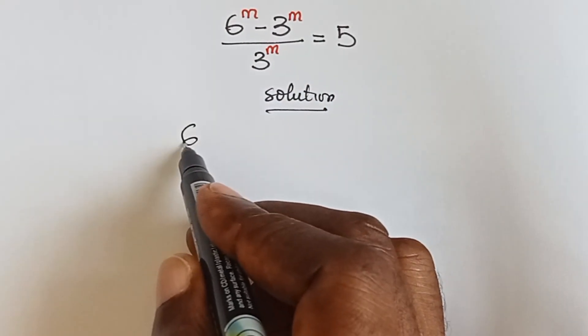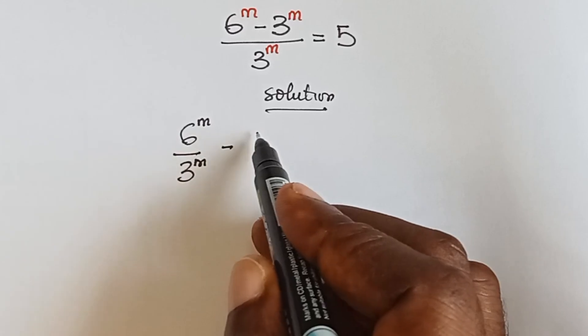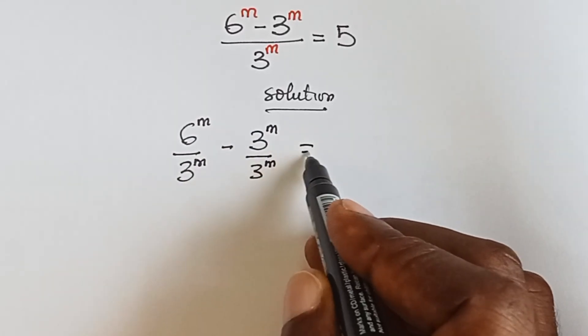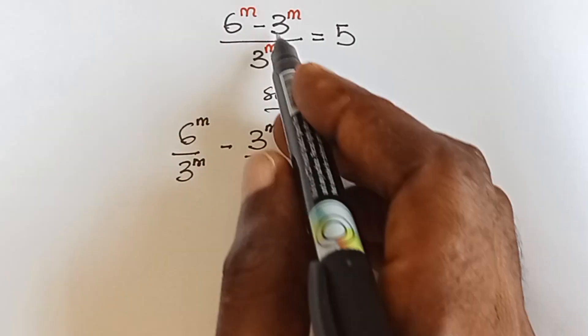This can also be written as 6 raised to power m over 3 raised to power m, minus 3 raised to power m over 3 raised to power m, equals 5. By the time we simplify this, we get this.